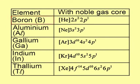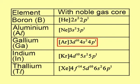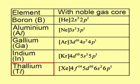Electronic configuration of boron with noble gas core is helium core 2s2, 2p1. Electronic configuration of aluminium is neon core 3s2, 3p1. Electronic configuration of gallium is argon core 3d10, 4s2, 4p1. Electronic configuration of indium is krypton core 4d10, 5s2, 5p1. Electronic configuration of thallium is xenon core 4f14, 5d10, 6s2, 6p1.